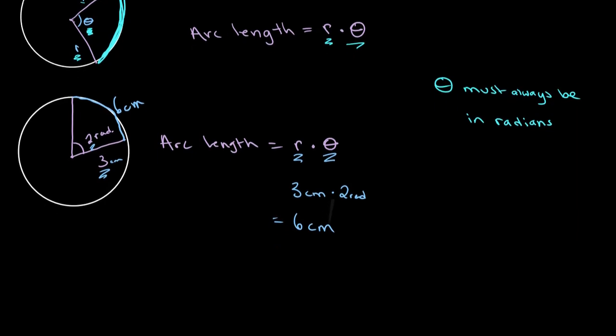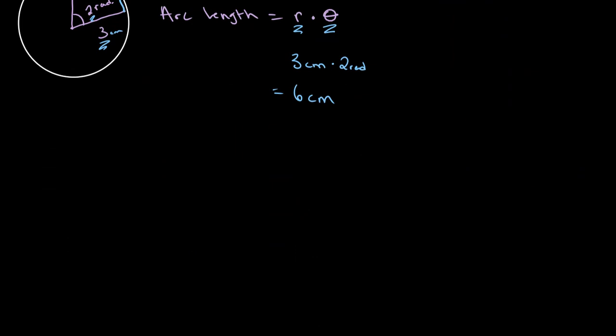I'm going to go over one more example. Let's say we have another circle with a radius of 4 centimeters and a sector at an angle of 1.5 radians, and we need to solve for the length of this arc. We multiply the radius times theta, so 4 multiplied by 1.5 gives us 6. So the arc length is 6 centimeters.